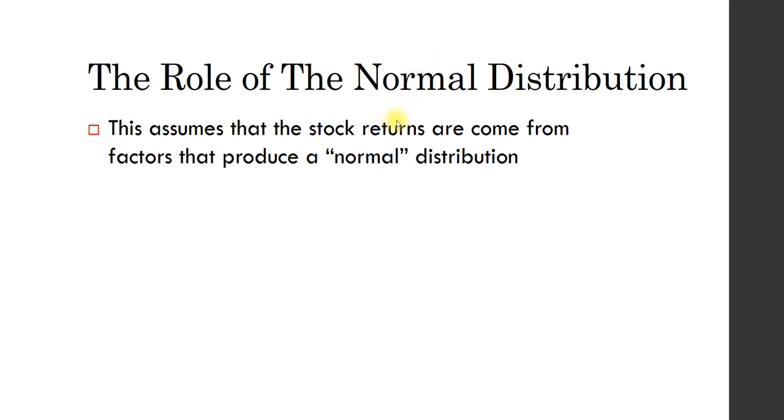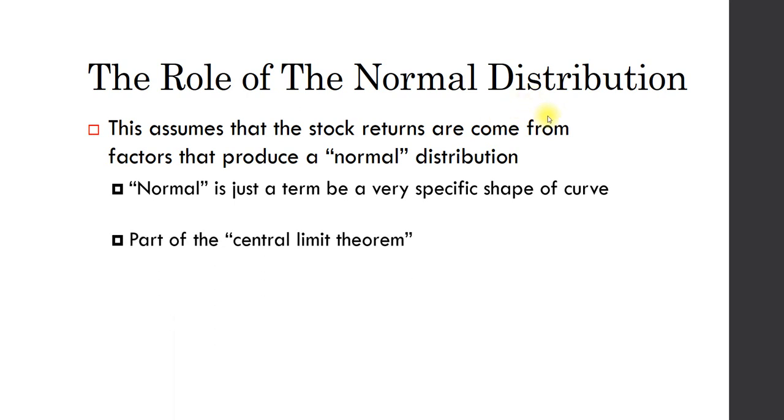We have to assume the stock returns all come from a normal distribution. All the term normal means is the way that the curve is. The shape of the curve follows a normal distribution. This normal distribution comes from the ideas of the central limit theorem. We will not review the framework from which the normal distribution is arrived at in this video.